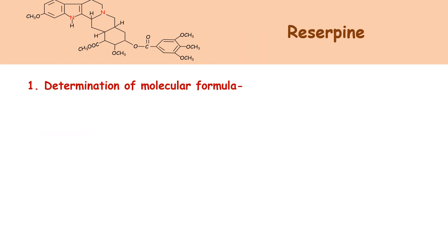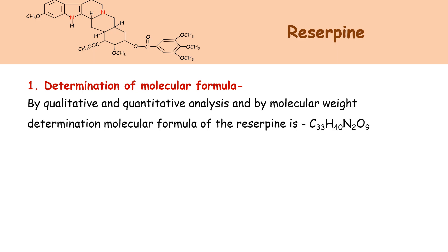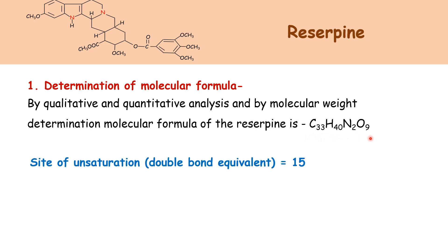The first step is determination of molecular formula. By qualitative and quantitative analysis and by molecular weight determination, the molecular formula of reserpine is C33H40N2O9. For this molecular formula, the degree of unsaturation, that is double bond equivalent, is equal to 15.